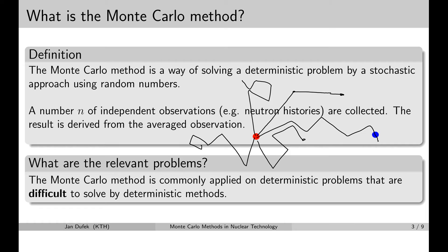So what kind of problems are suitable for the Monte Carlo method? Typically these are deterministic problems which are very hard and difficult to solve by deterministic methods. In principle all deterministic problems can be solved by deterministic methods; however, those problems which are very complex require very severe approximations and simplifications, and these approximations are reflected into errors in the results. So if we do not want to accept large errors in the results, we typically use the Monte Carlo method.